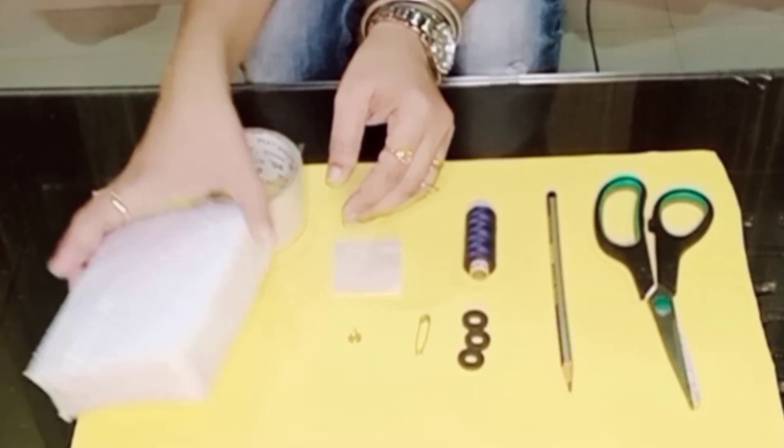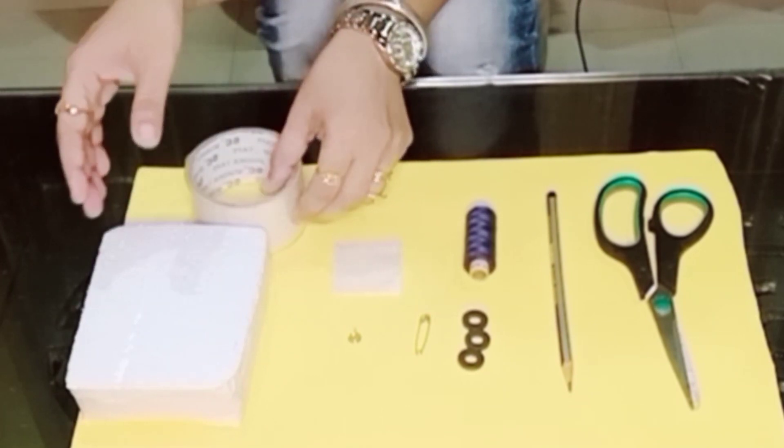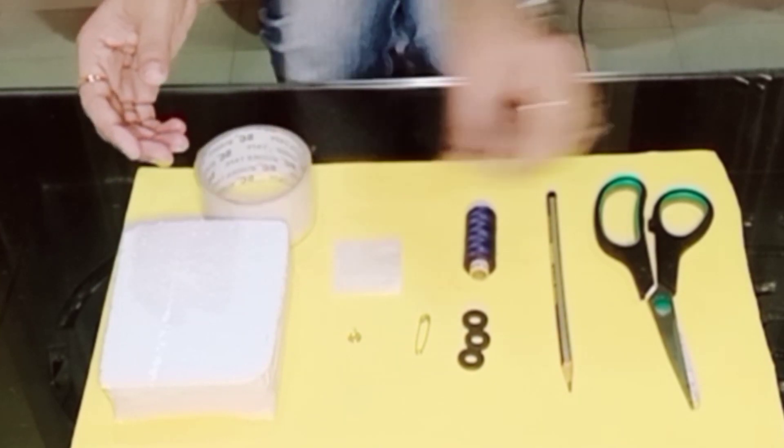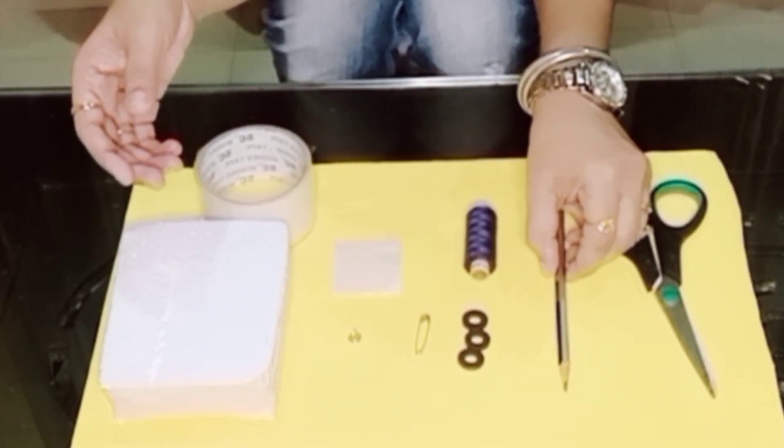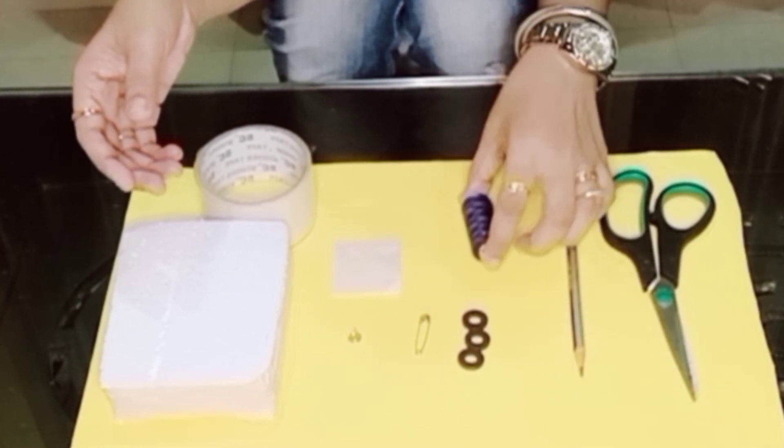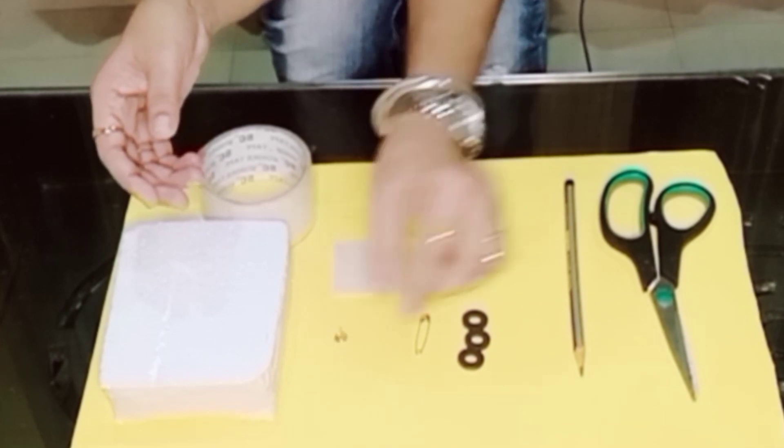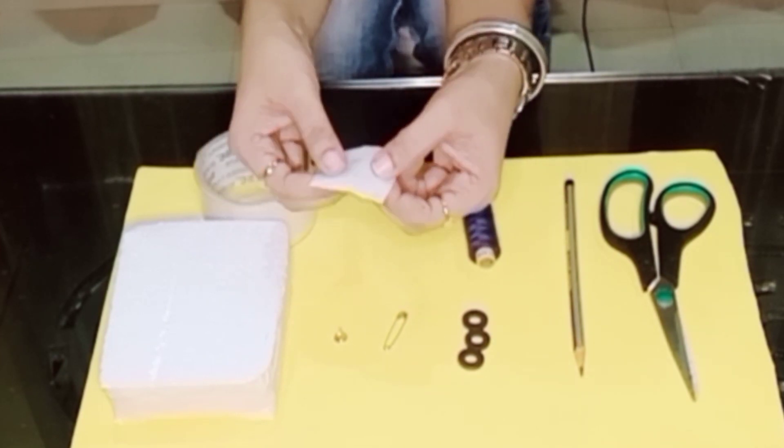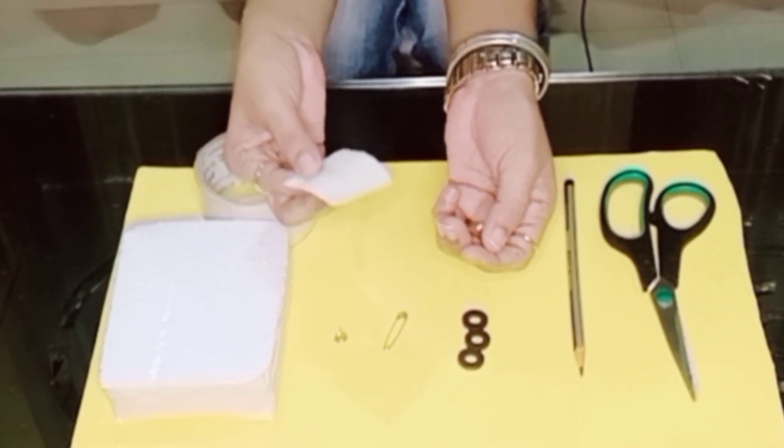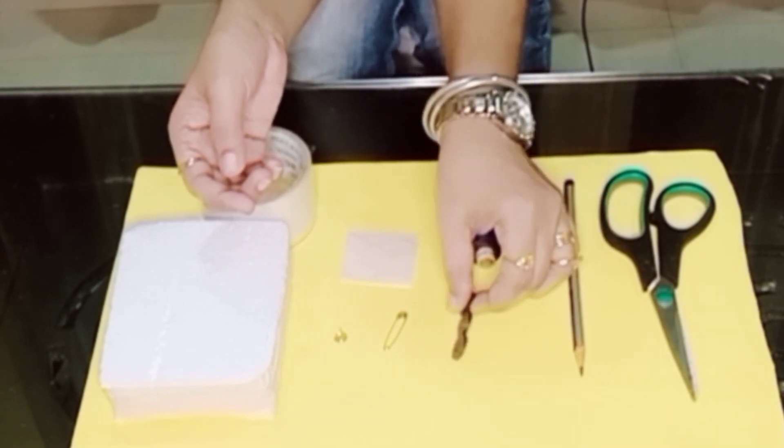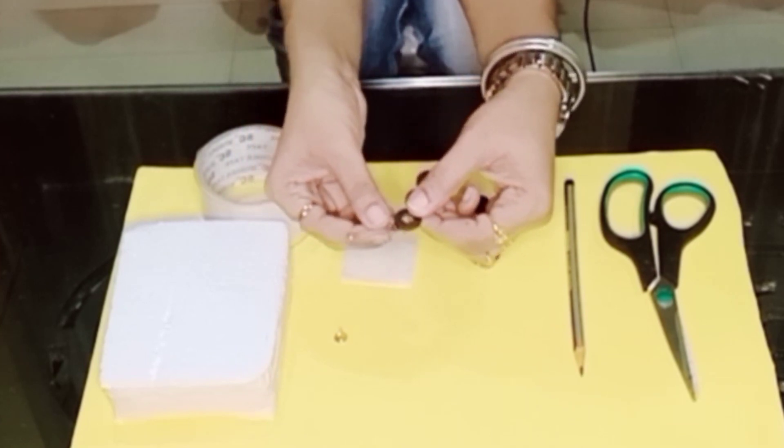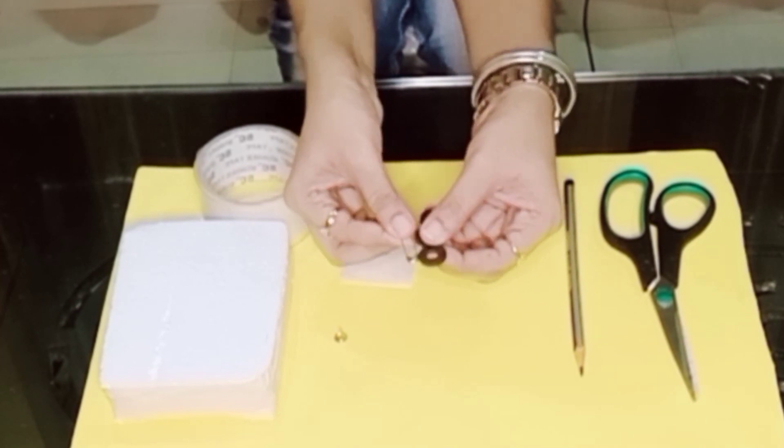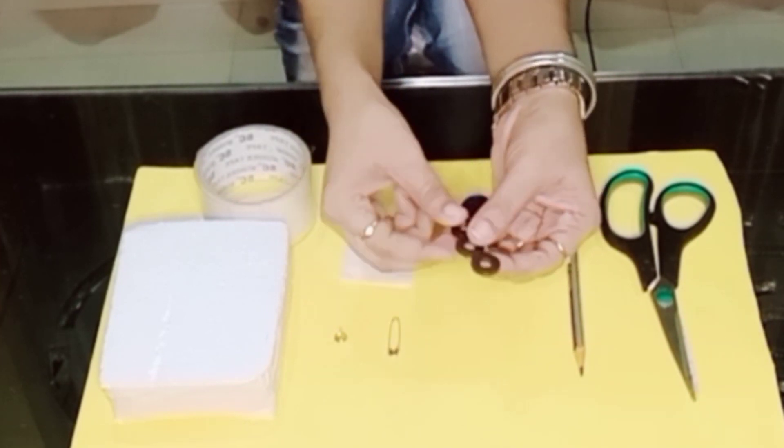The things required are: this is thermocol, we can take any waste thermocol which is lying at your house, cello tape, pair of scissors, pencil, thread, this is a board pin, safety pin, and this one is paper. You have to keep in mind that you have to take a very lightweight paper, and of course these magnets. These are the three magnets.